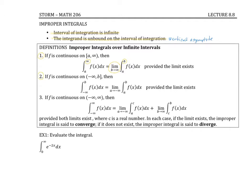Case two: if the lower limit is negative infinity, again I can't plug in negative infinity, so I need a temporary substitution using a. I'll first evaluate the integral and then take the limit as a goes to negative infinity.